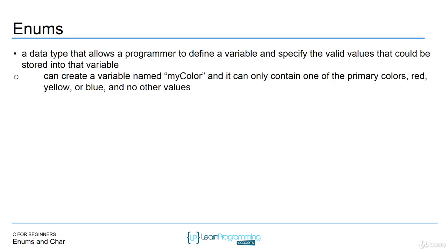For example, you could create a variable named mycolor, and if it's a certain enum type you can set it so that it only can be assigned values of primary colors such as red, yellow, or blue. No other values can be assigned to it — the compiler will give you an error. So it's sort of like a data type that you can specify and create.